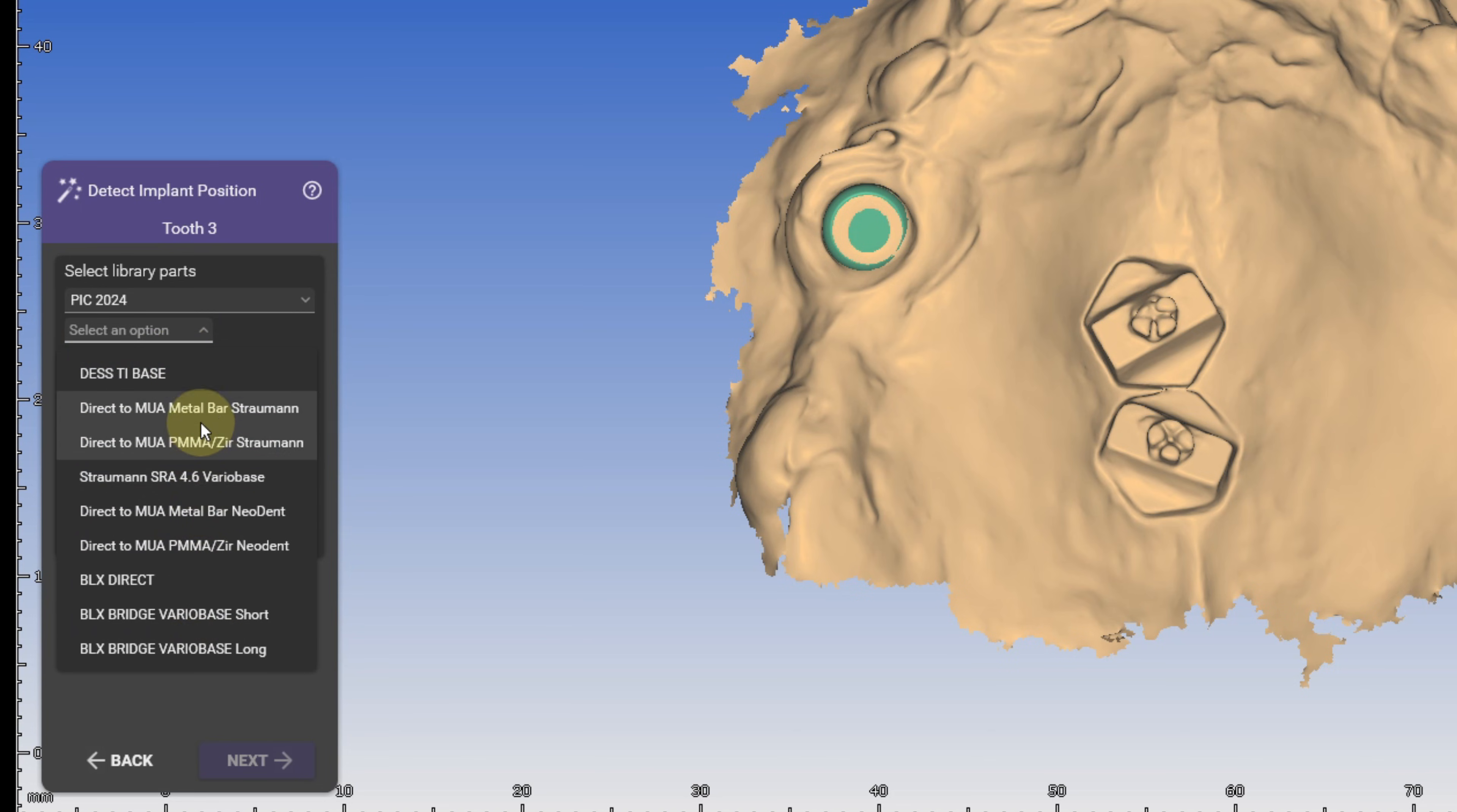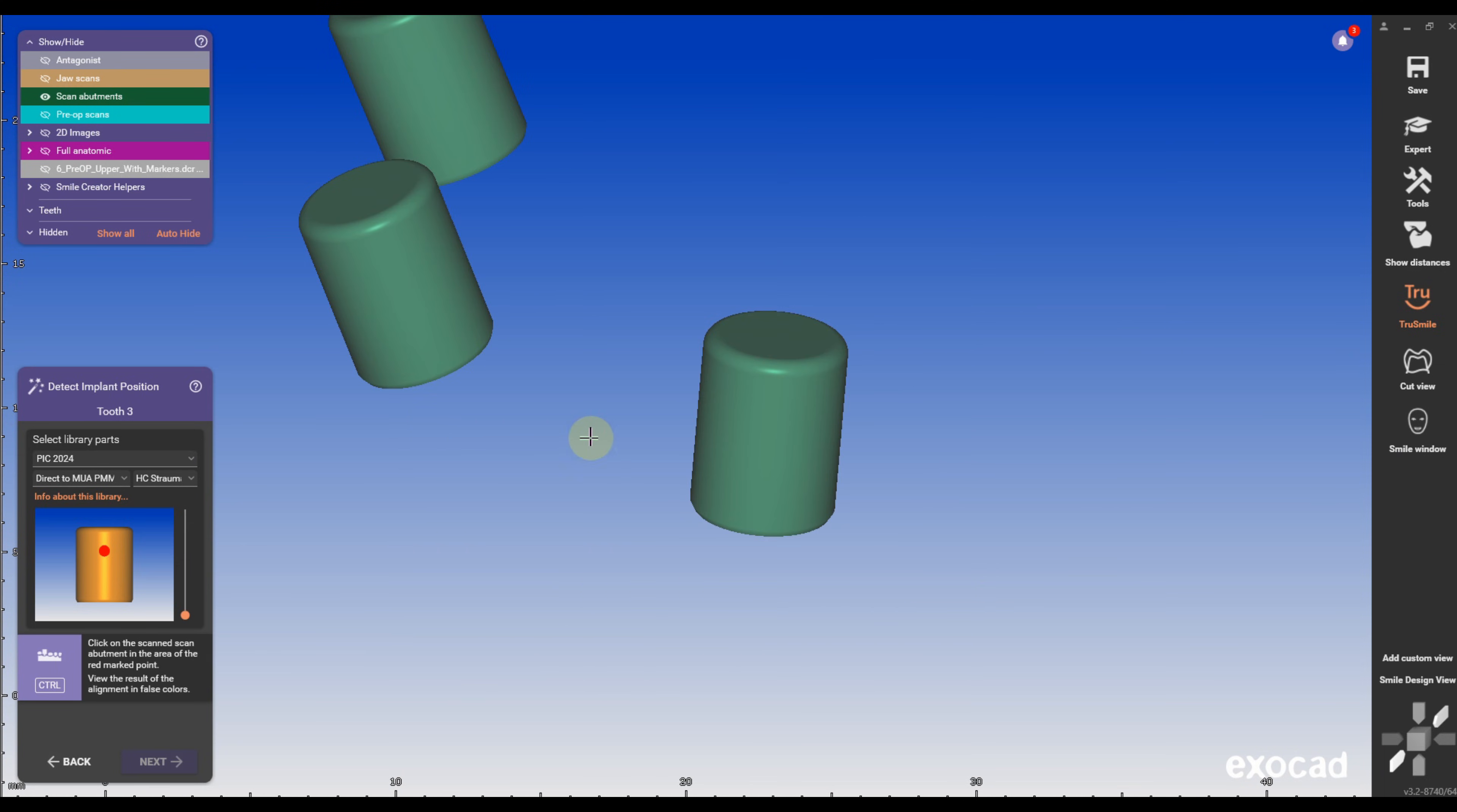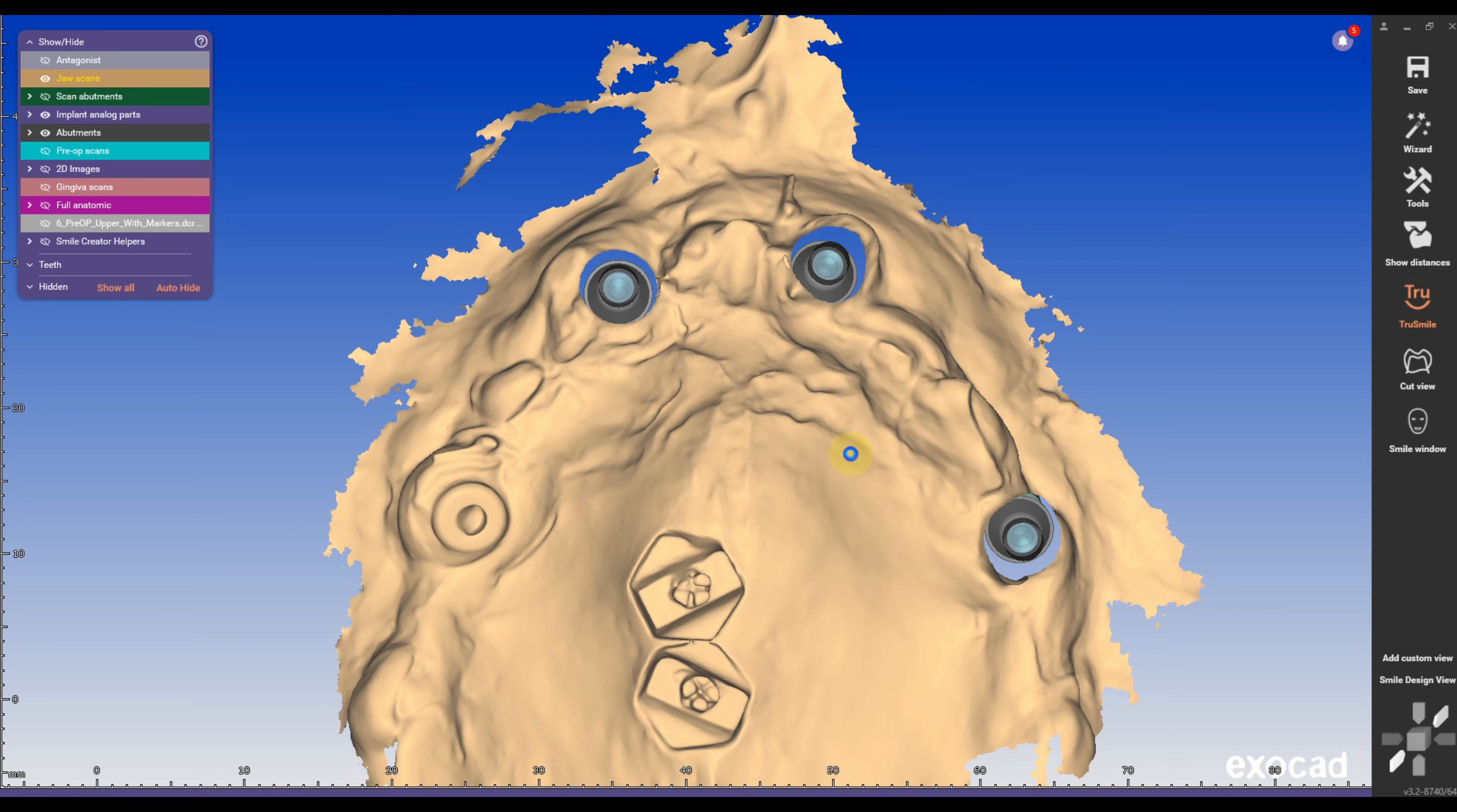In this case, we are using a PIC scanner, and the team from PIC will provide you with all the necessary libraries. This case involves Straumann implants, so I am using the direct-to-multi-unit PMMA selection and align the library to the PIC STL. Avoid using the IOS scan file as your scan abutment file, since it will be highly inaccurate.